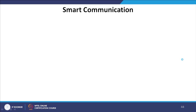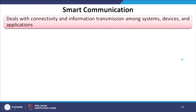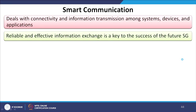Now let us move to smart communication, which deals with connectivity and information transmission among systems, devices, and applications. Reliable and effective information exchange is a key to the success of the future smart grid.